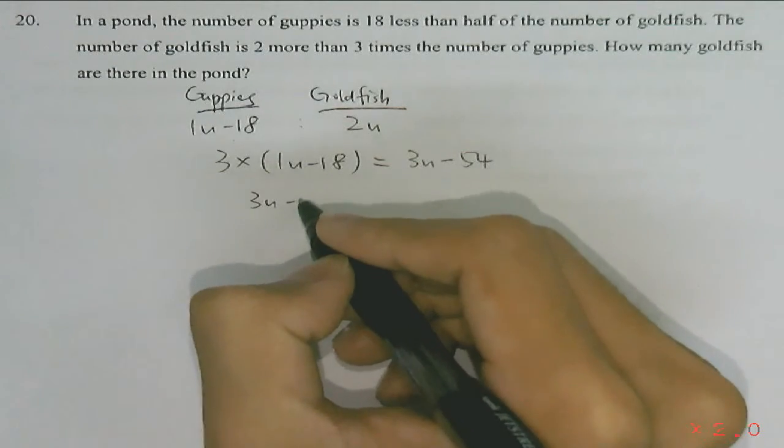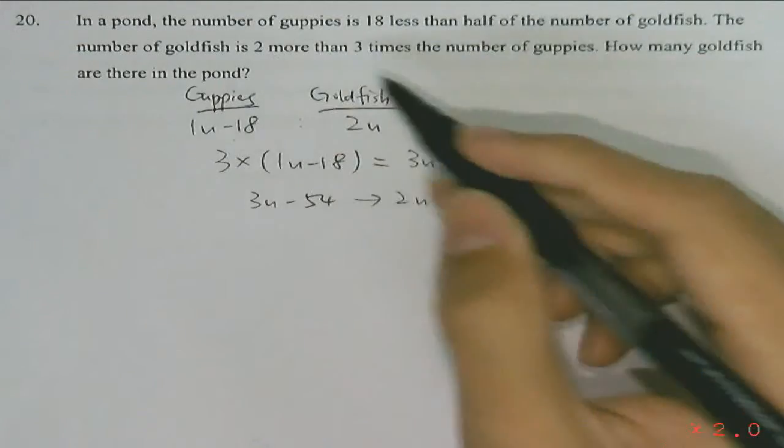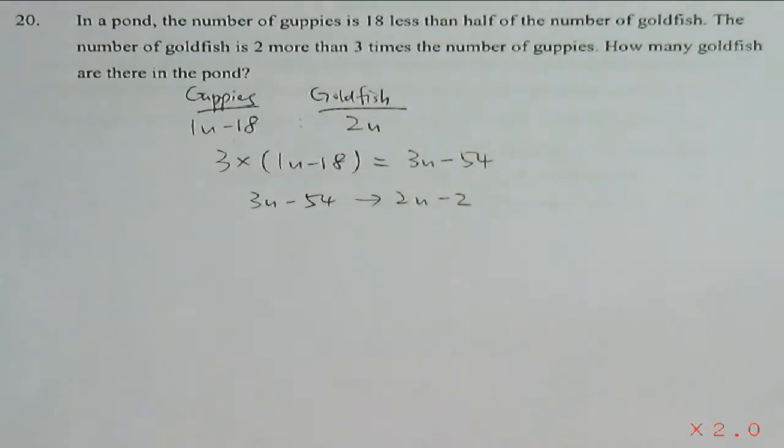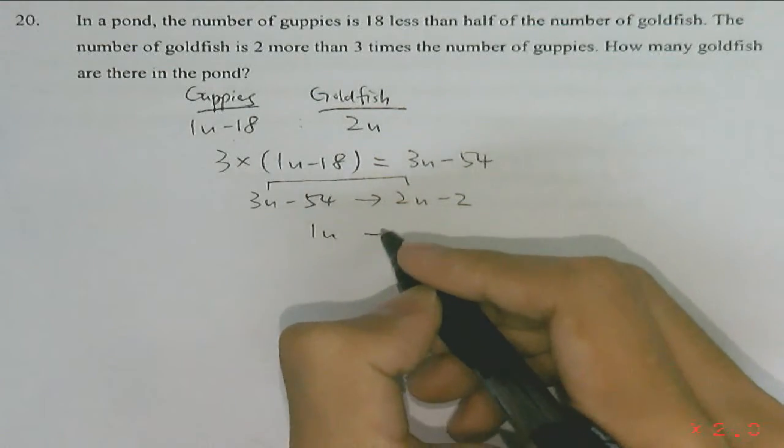We know that 3 times the number of guppies is the same number as the number of goldfish subtracting off 2. So we find the difference between 3 units and 2 units, that will give us 1 unit.